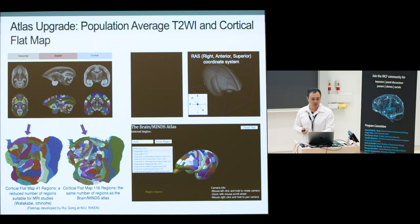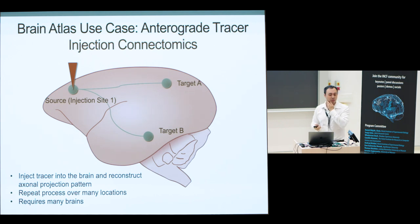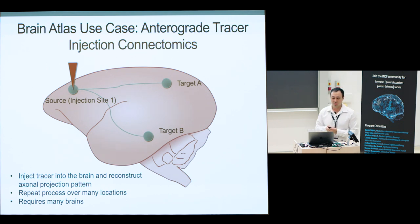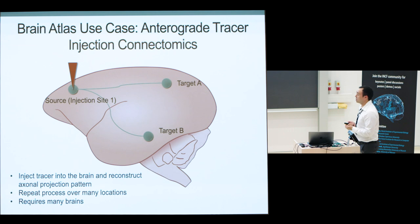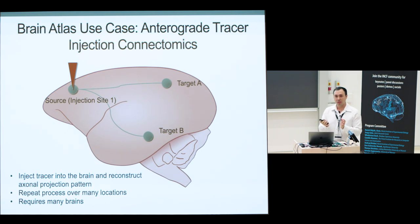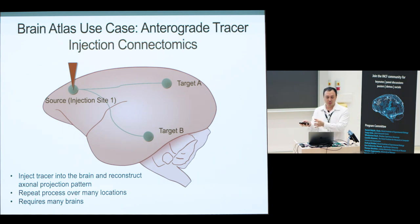I want to spend some time describing a use case for how this atlas is being used, which will also give you an idea of the type of data being collected. In Piotra's work they're doing retrograde tracer injection studies, and in our work we're doing anterograde tracer injection studies. We inject an anterograde tracer at the source, which infects cells and causes them to express fluorescent proteins that travel down to target sites. We do this for a number of brains, computationally process and map it into a common space, and generate a connectome of the marmoset brain.